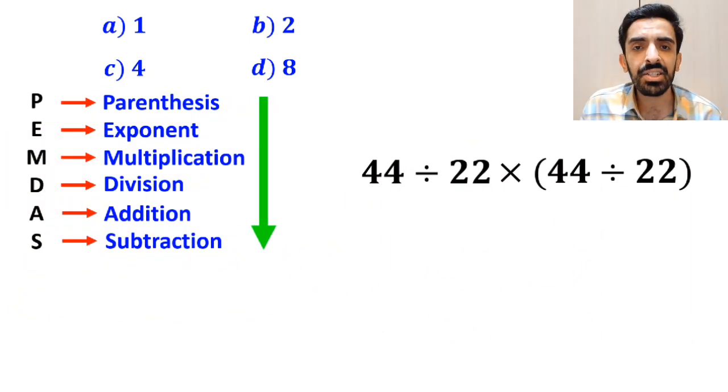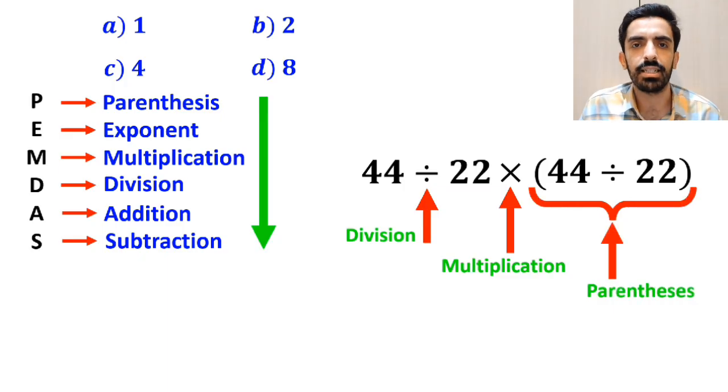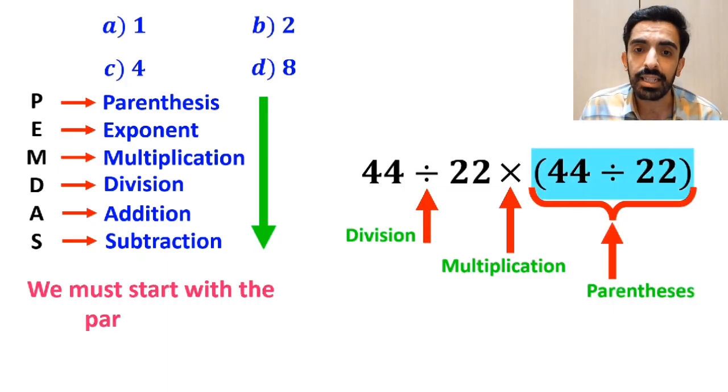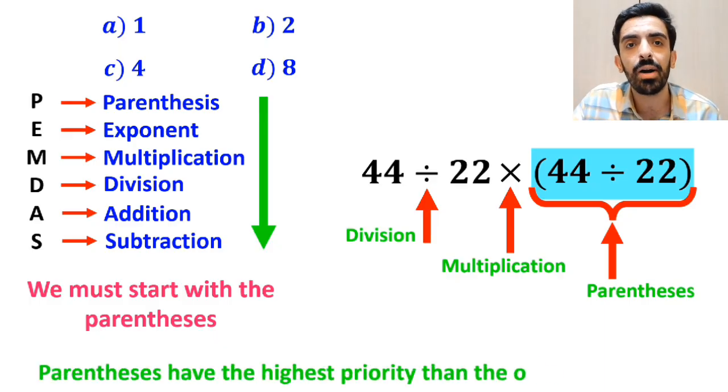As you can see on the screen, in this expression, first we have a division sign, then a multiplication sign, and finally parenthesis. According to the PEMNAS rule, we must start with the parenthesis, because parenthesis have the highest priority compared to the other operations.